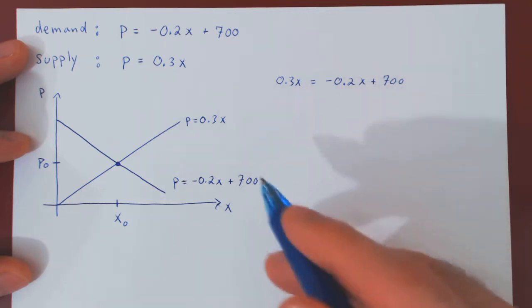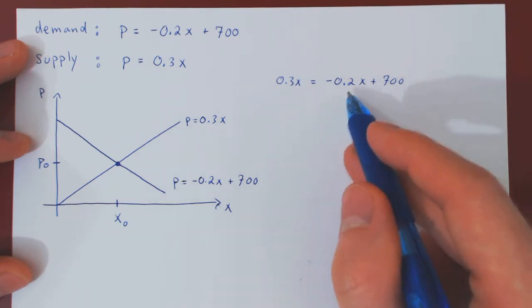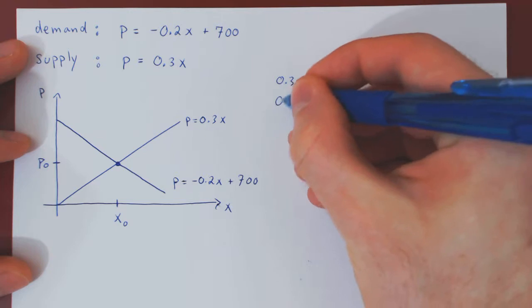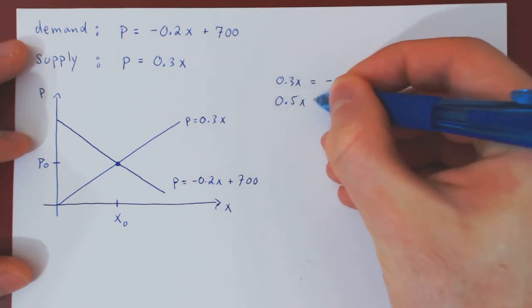Let me add 0.2x on both sides, so we'll have 0.3 plus 0.2x, so 0.5x is 700.